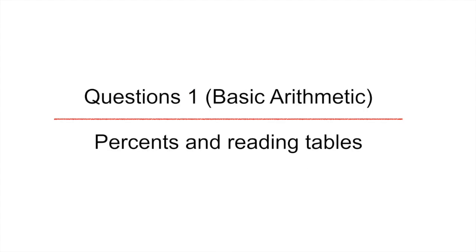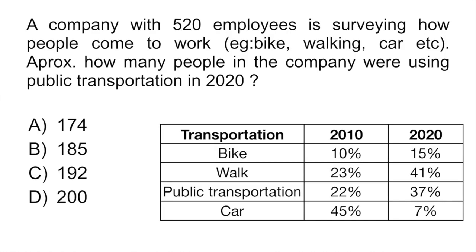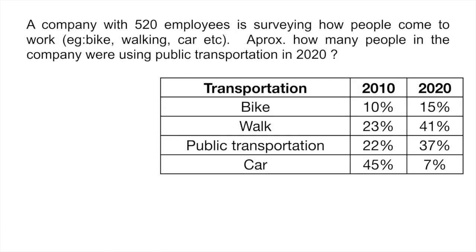Our first basic arithmetic question today deals with percents and also reading tables. A company with 520 employees is surveying how people come to work — either by bike, walking, car, etc. Approximately how many people in the company were using public transportation in 2020?